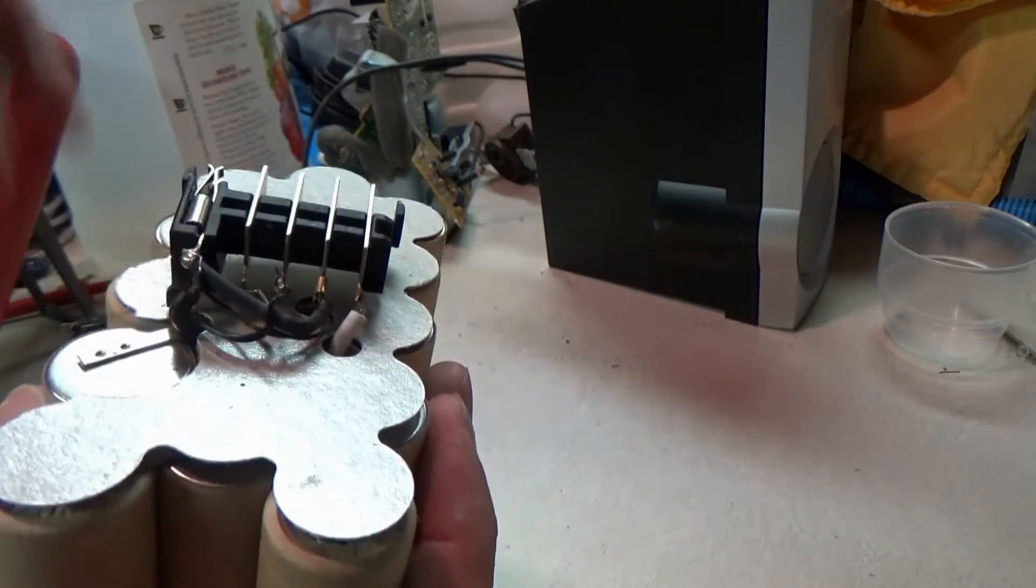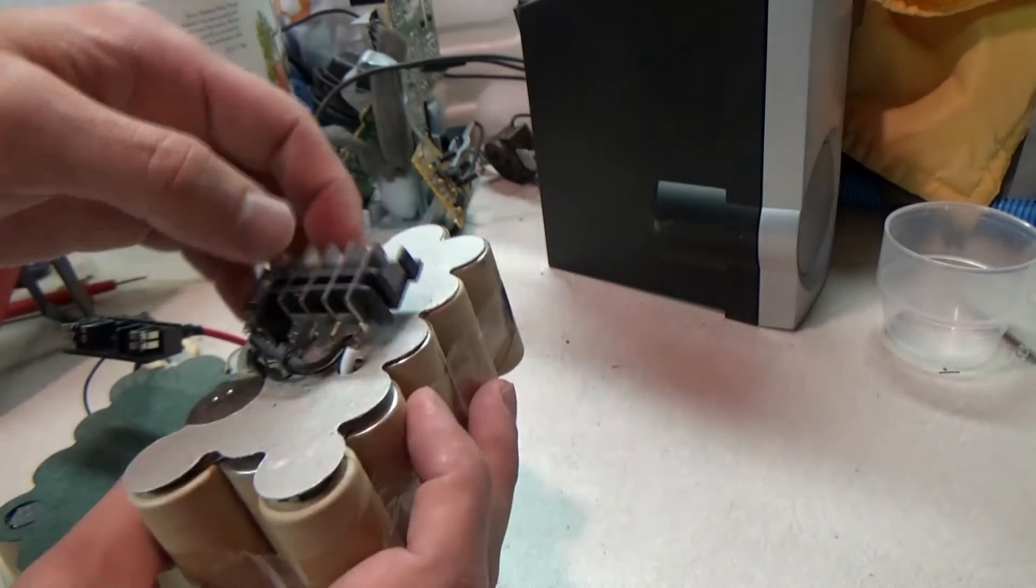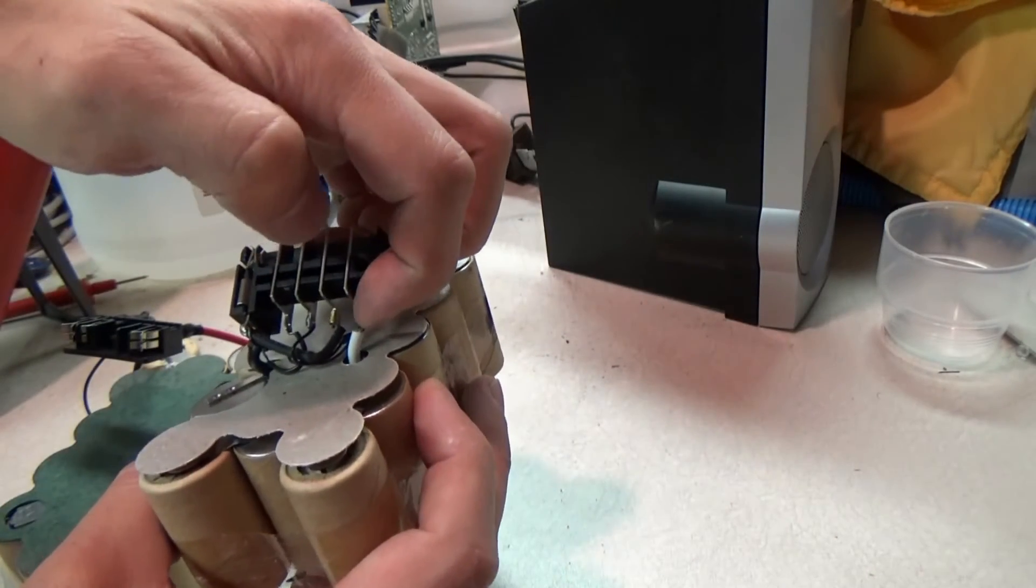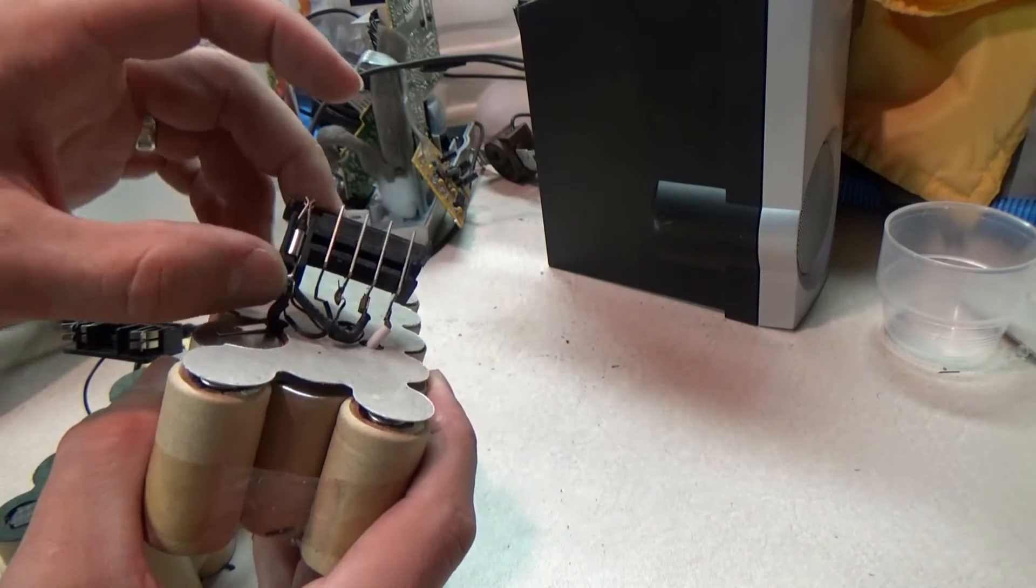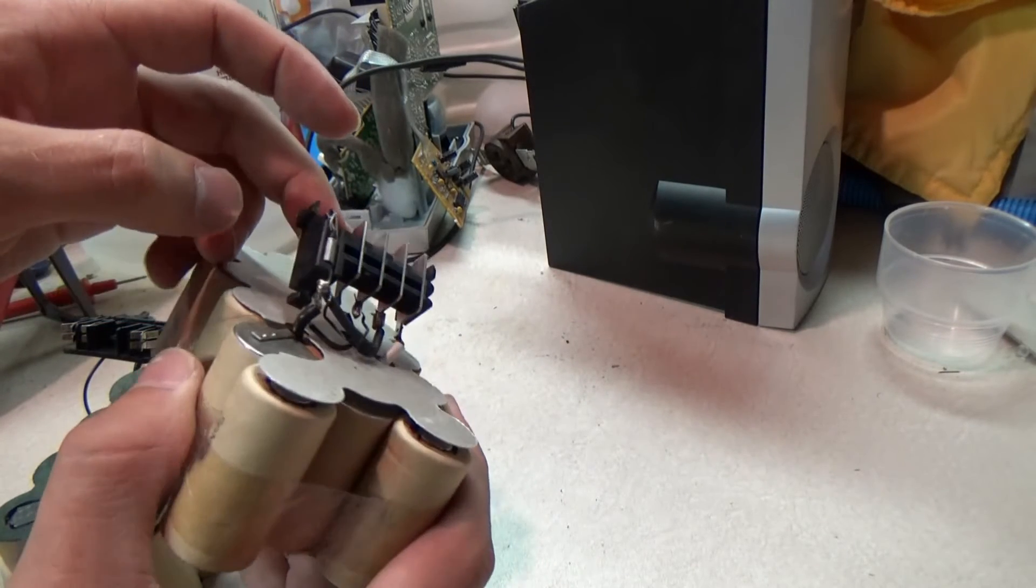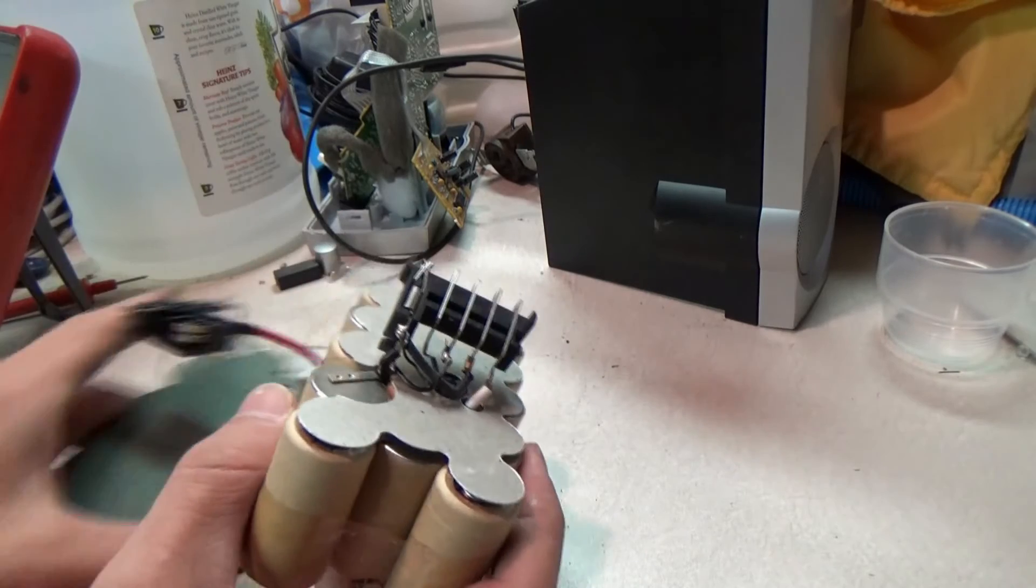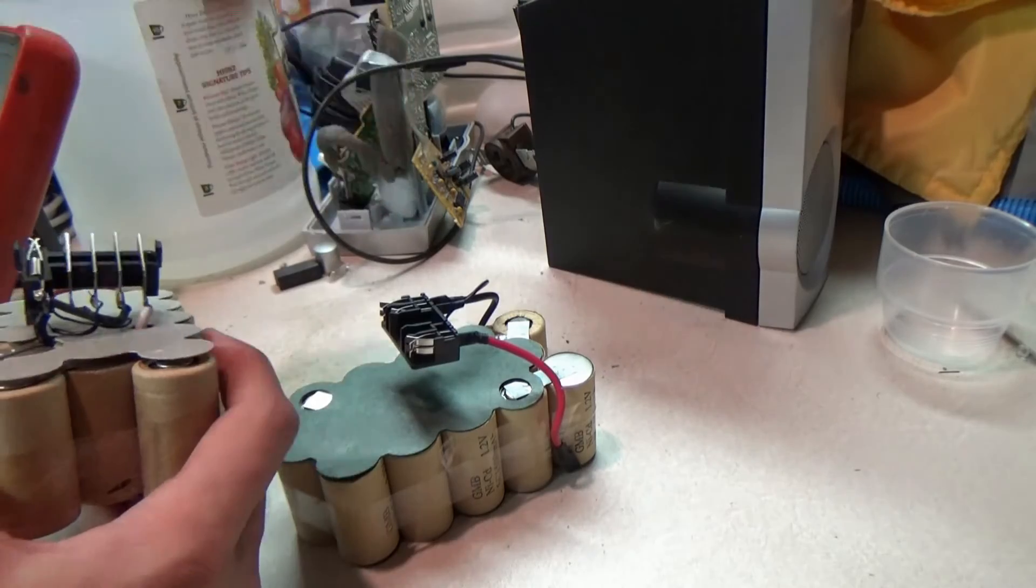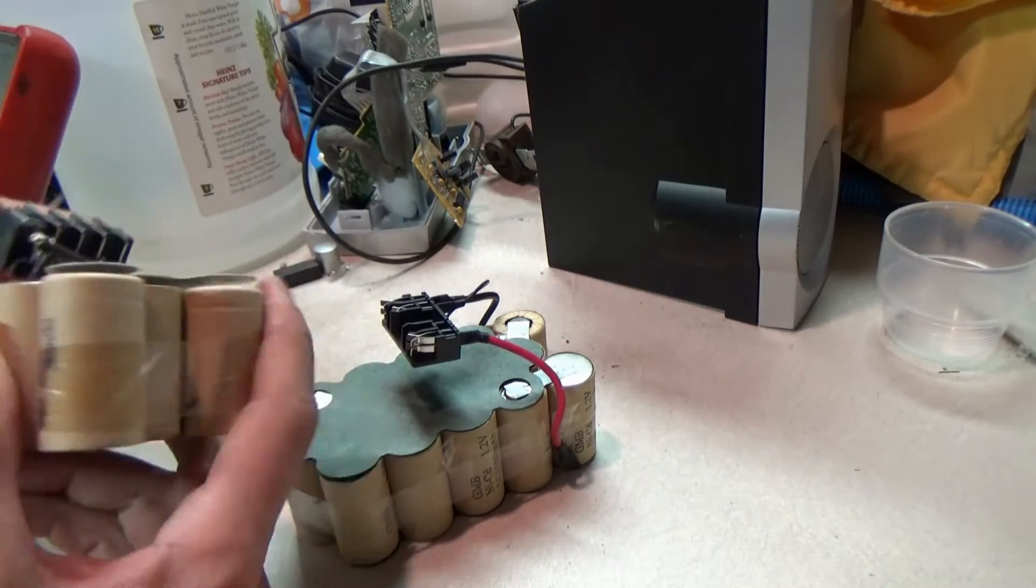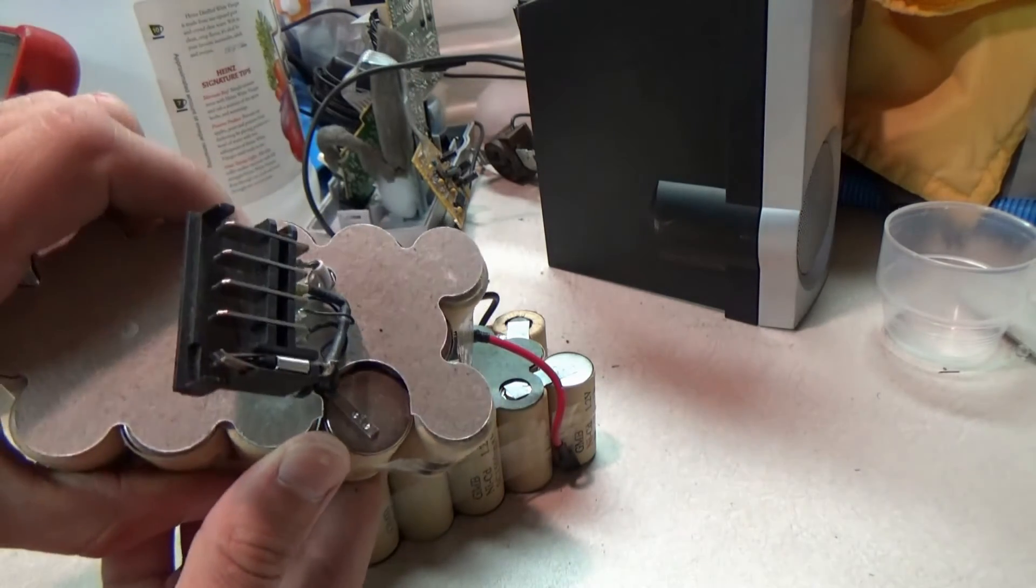Moving on, we'll get to desoldering these leads. Pull this lead off here, and we'll pull our positive or negative lead off here, and then we'll switch over to the other battery pack, desolder these, solder this lead on, and then we should be good to go to give it a test drive.